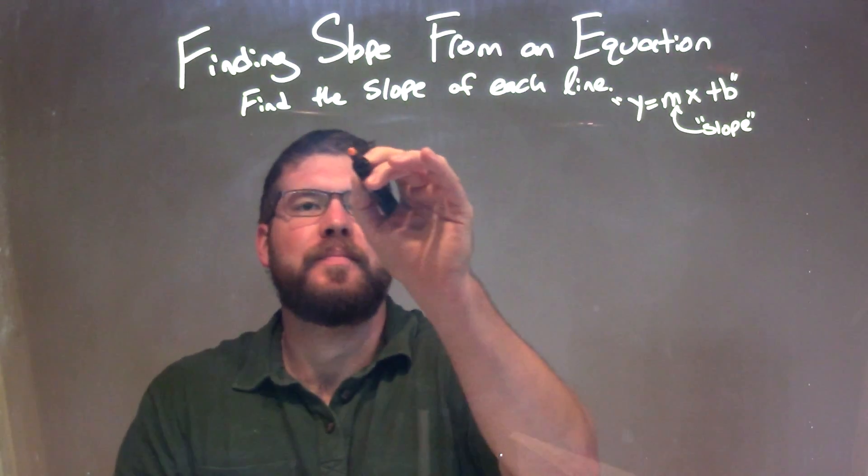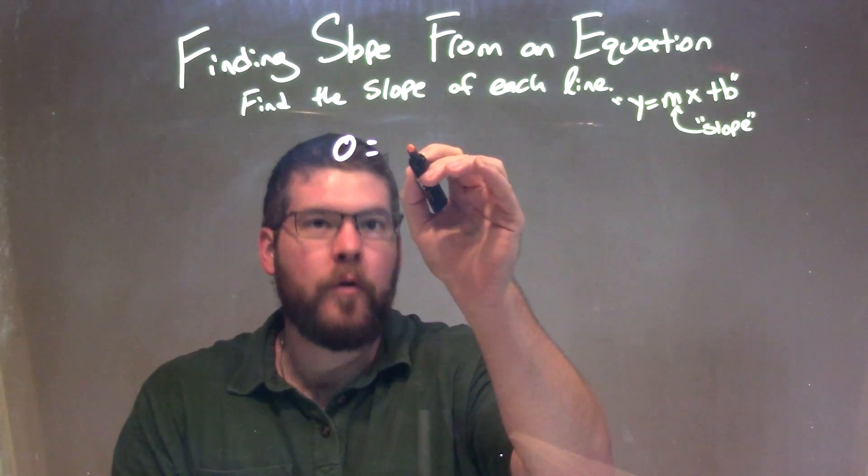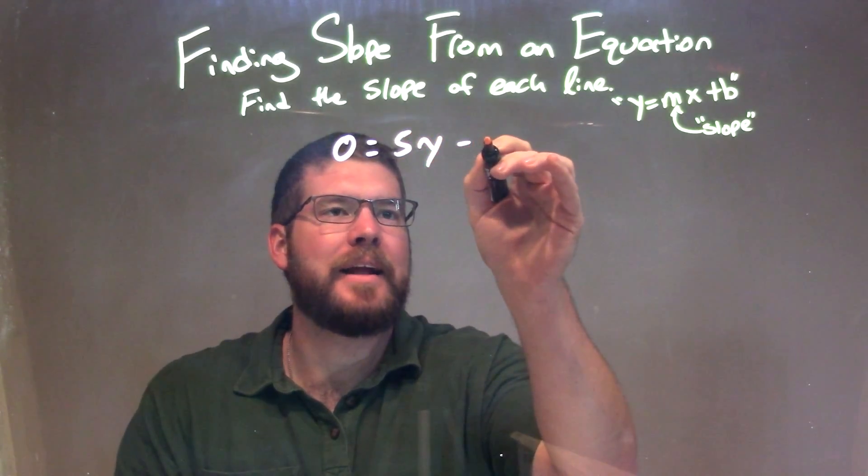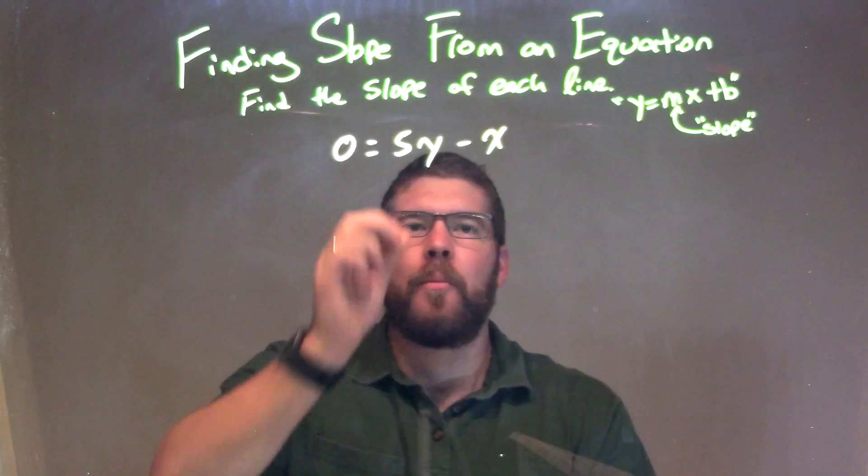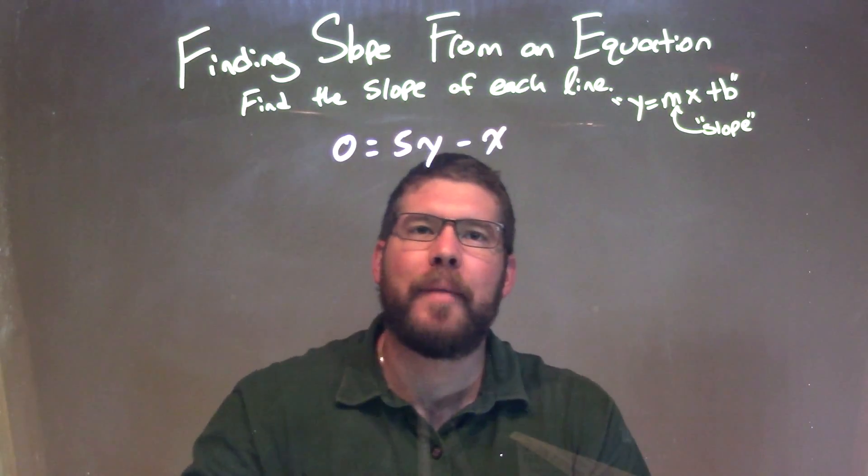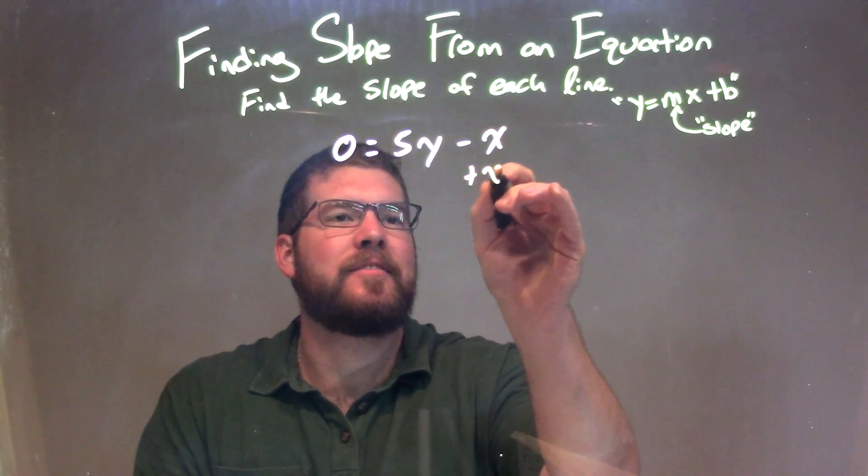If I was given this equation, 0 equals 5y minus x, and I want to find the slope here, I'm going to get y by itself. So let's add an x to both sides.